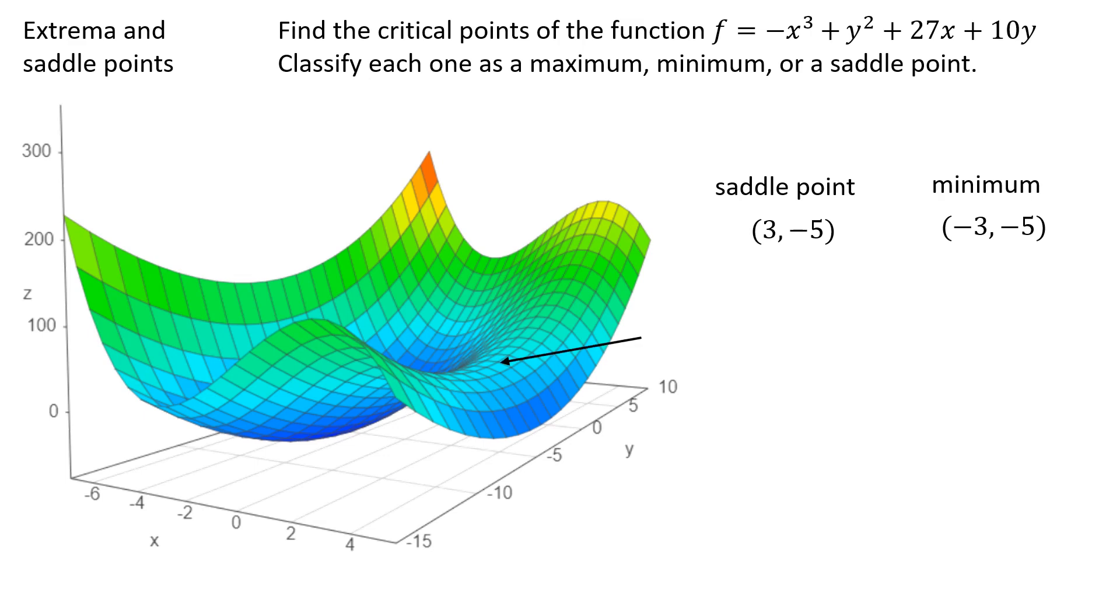For example, you'll notice here is the point I alluded to the possible saddle point earlier. This bottom point here in this portion of the graph is going to be a local minimum.